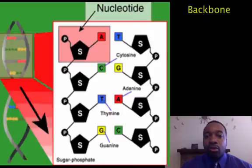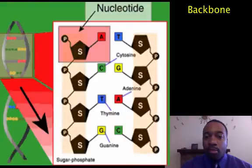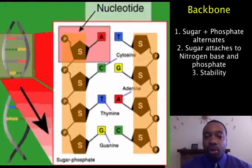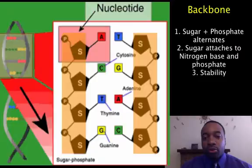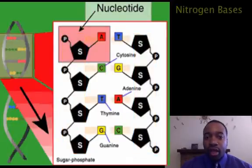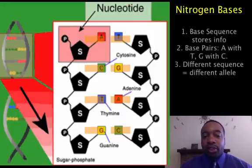So if we were to look at this double helix structure again, the backbone — the sugar-phosphate alternating backbone — gives this molecule its stable structure. And then the rungs of the ladder, the A, T, G's, and C's, is actually where the information is stored.